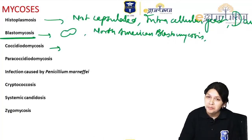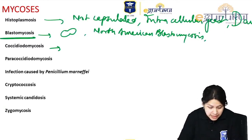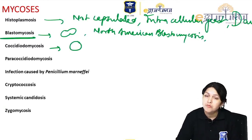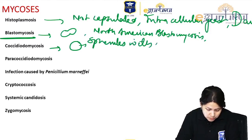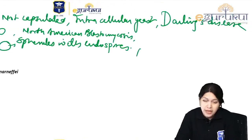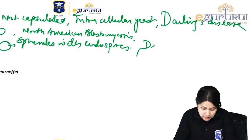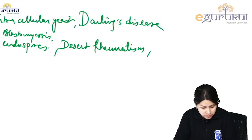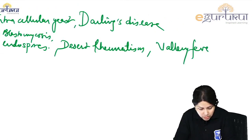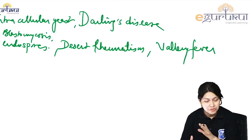Coccidioides immitis: here we see spherules filled with endospores. The disease is known as desert rheumatism, valley fever, or San Joaquin valley fever.